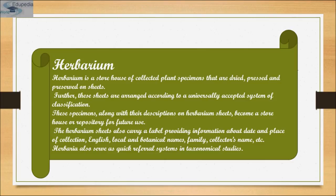To preserve their form and color, plants collected in the field are spread flat on sheets of newsprint and dried, usually in a plant press between blotters or absorbent papers. The specimens are then mounted on sheets of stiff white paper and labeled with all essential data such as date and place found, description of the plant, altitude, and special habitat conditions. The sheet is then placed in a protective case.